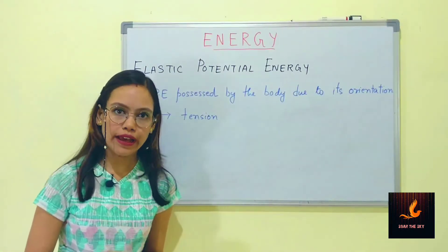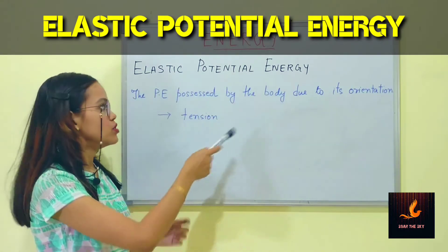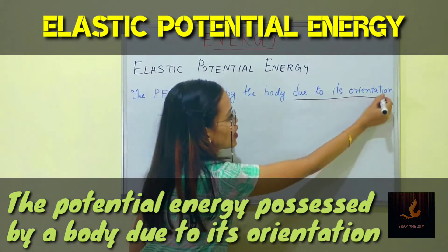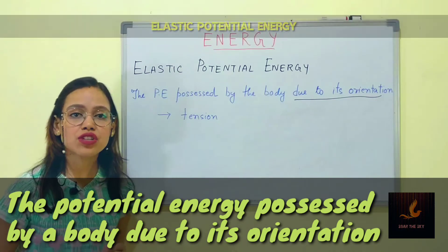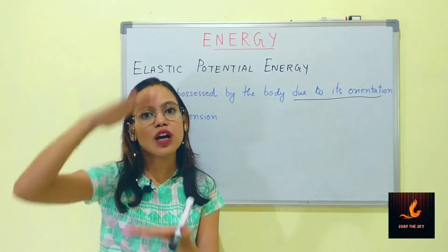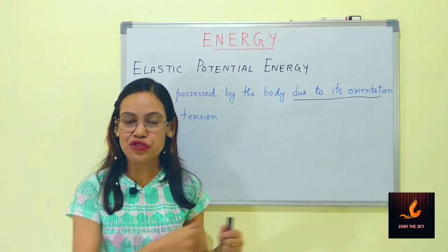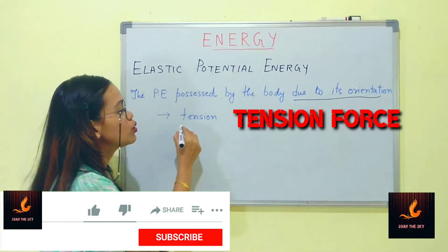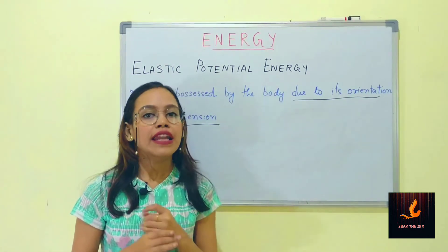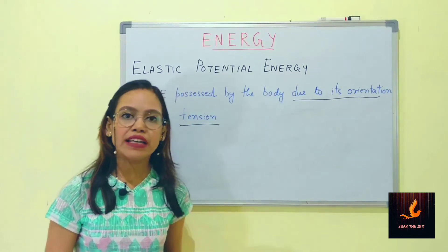The next type of potential energy is elastic potential energy — the potential energy possessed by a body due to its orientation, that is how it is adjusted. Any energy formed due to compression or stretching something, which occurs due to tension force, is called elastic potential energy. For example, the boy is stretching a rubber band with a piece of paper, creating tension force which generates elastic potential energy.